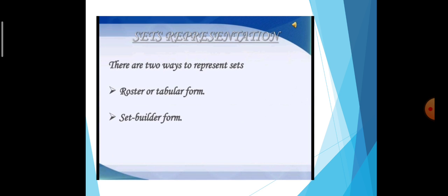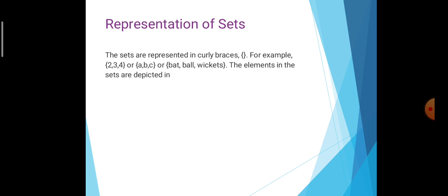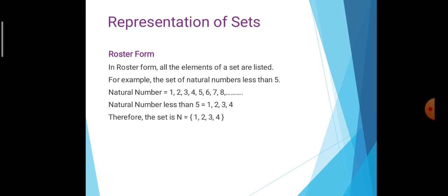Now, representation of sets. There are two ways to represent sets: roaster (tabular) form and set builder form. The sets are represented in curly braces. For example: {2, 3, 4} or {A, B, C} or {bat, ball, wickets}. The elements in sets are depicted in roaster form and set builder form.